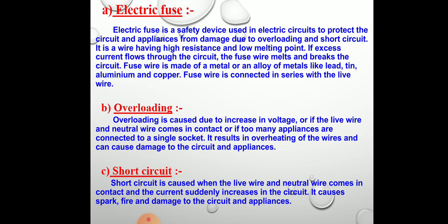Overloading is caused due to an increase in voltage, or when too many appliances are connected to a single socket, resulting in overheating of the wires, which causes damage to the circuit and appliances. Short circuit is caused when the live wire and neutral wire come in direct contact — when the insulation is gone, the wires touch and a spark is produced, the current suddenly increases in the circuit, causing spark, fire, and damage.